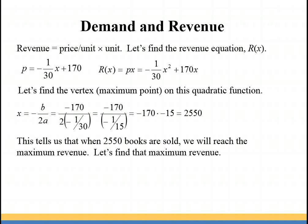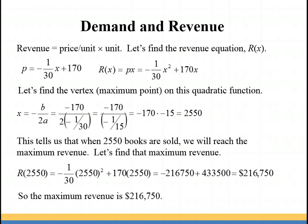But we need to also find that maximum revenue. So we're going to plug the 2550 back into the revenue equation and solve. We have -1/30 times 2550² plus 170 times 2550 which gives us $216,750 in revenue. Keep in mind this is not profit. This is strictly revenue, so the income from those books not subtracting out the cost. So we have our maximum revenue, that gives us an ordered pair of 2550 as our input value and 216,750 as our output.